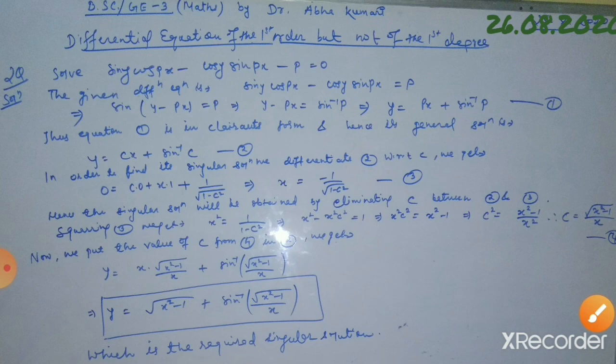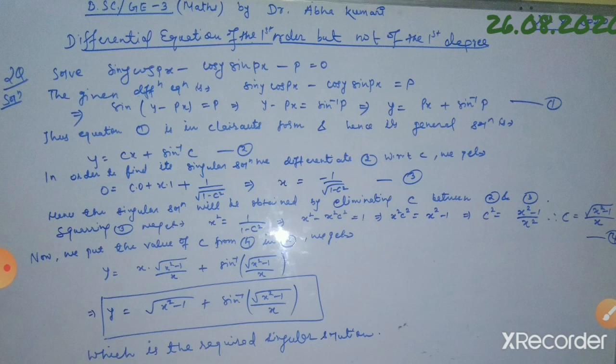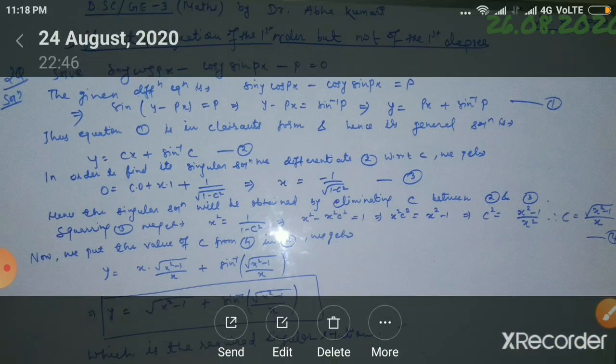Equation 1 is in Clairaut's form, and hence its general solution is y equals cx plus sin⁻¹(c), which we call equation number 2. To find the singular solution, we differentiate equation number 2 with respect to c. Why? Because equation number 2 cannot be reduced to the form of a quadratic equation, and finding a singular solution normally requires the equation to be quadratic so that roots are equal. Since it is not quadratic, we simply differentiate it with respect to c.